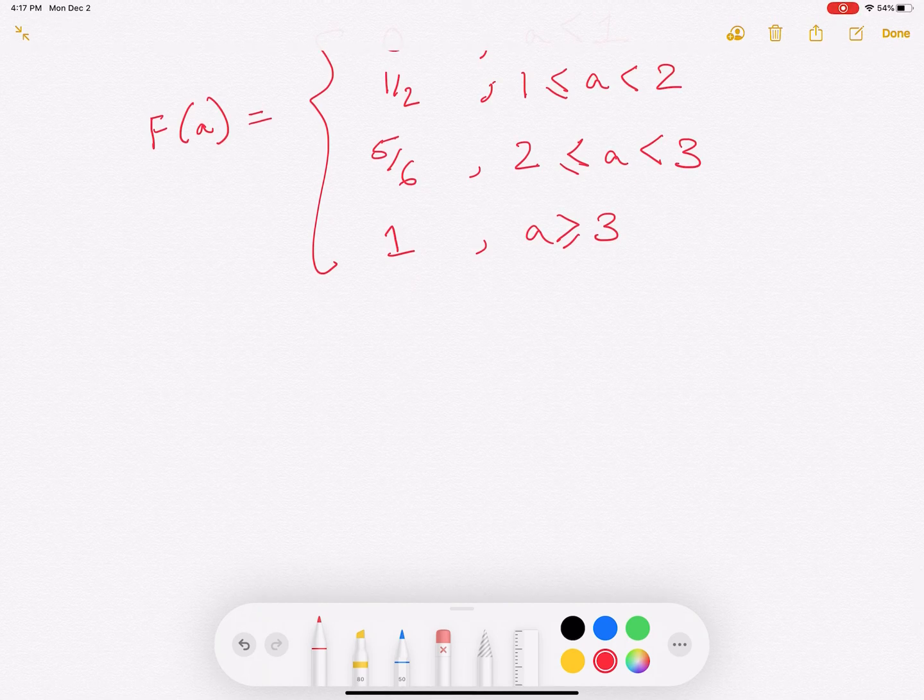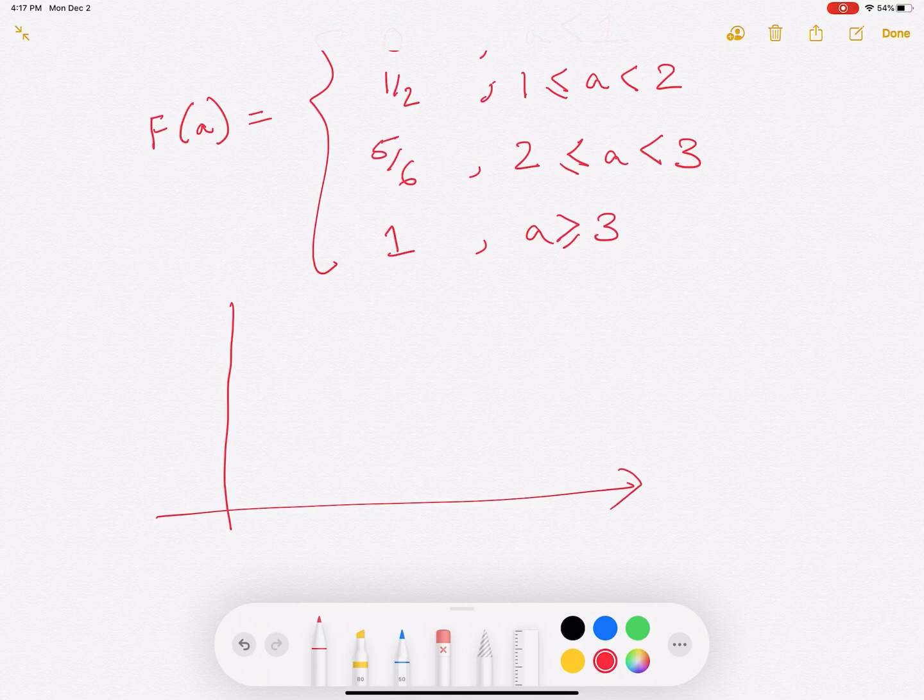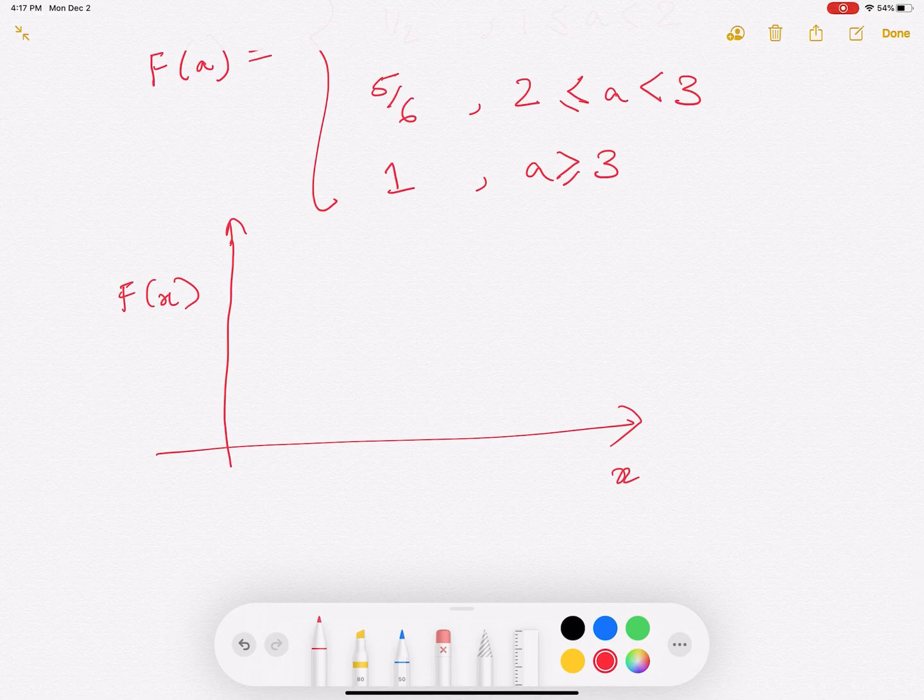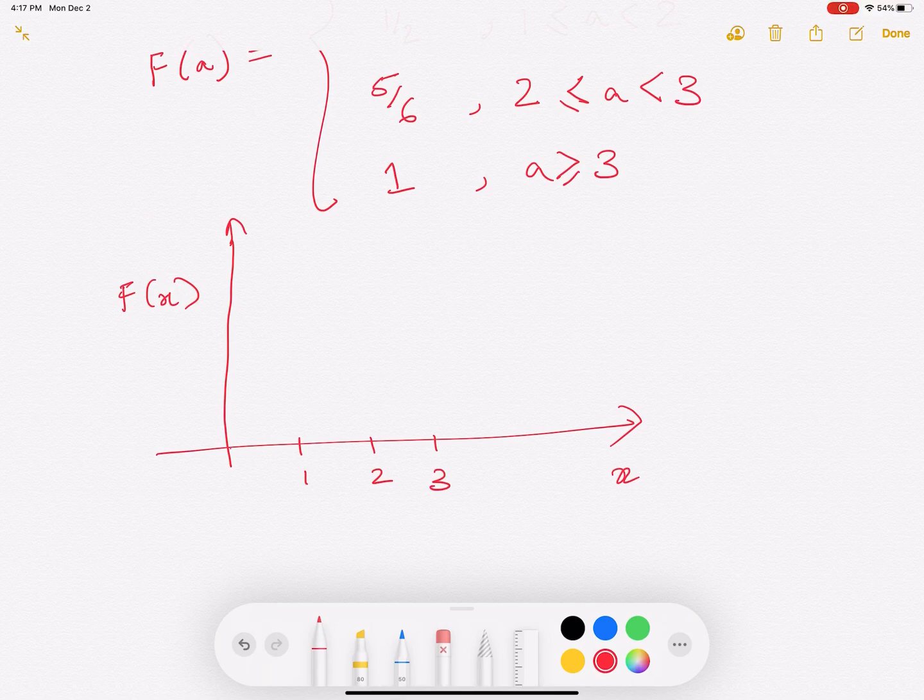So if you draw this CDF or the cumulative distribution, so I can draw this as fx and x here along the x-axis. So x can take three values: 1, 2, and 3. Now the CDF, it will be...